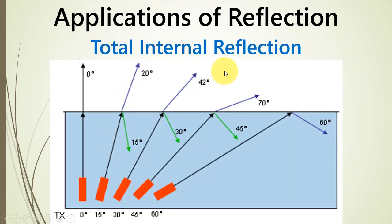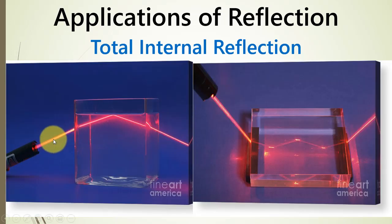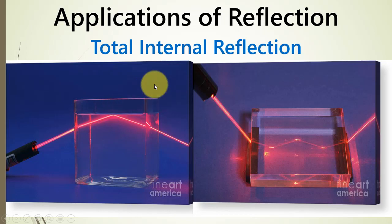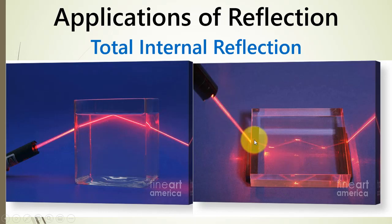Coming back to total internal reflection: this topic was left earlier because it also involves refraction, so it was important to study refraction first. As a practical example, consider shining a laser onto a slab of glass filled with a high refractive index material. If the angle of incidence is greater than the critical angle, the light will not exit the medium but will reflect back into the original medium — total internal reflection occurs. The light hits one end of the slab, reflects back, travels to the top, and reflects again.